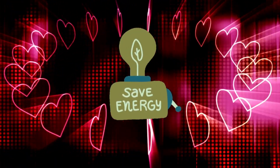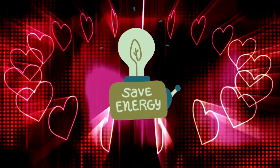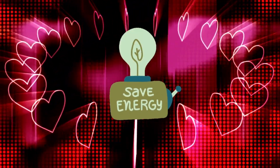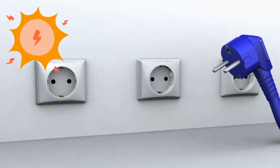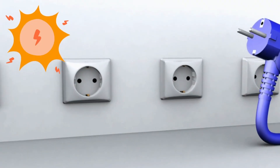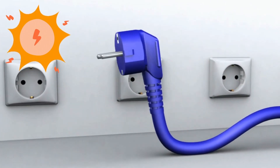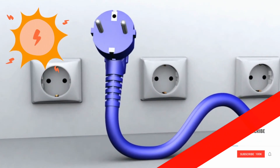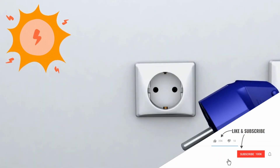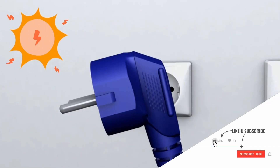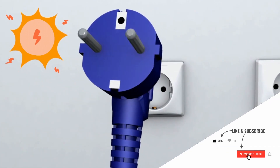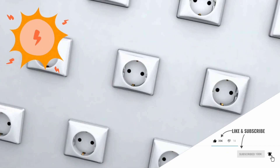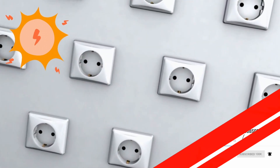LEDs can be made to produce light in almost any color by changing the chemicals in the semiconductor. So thank you very much for watching this video, hope it was helpful for you, and if you liked this video I will be very happy for your thumbs up and don't forget to subscribe. See you!